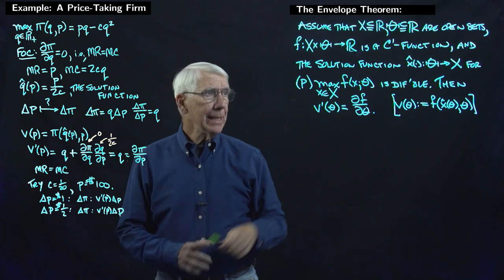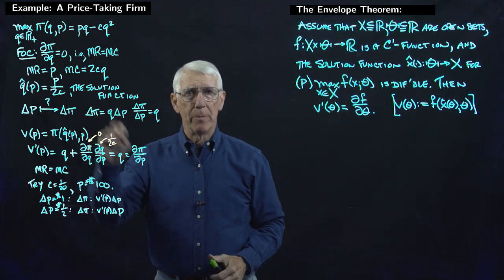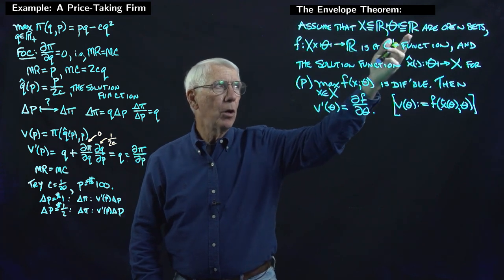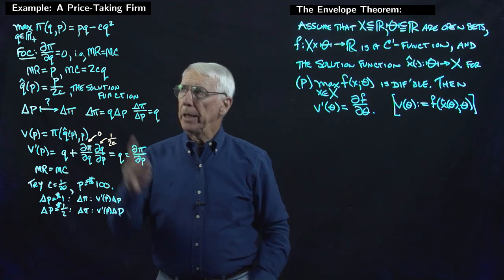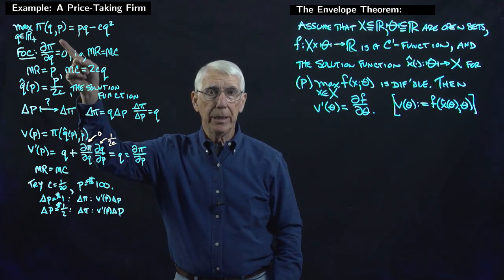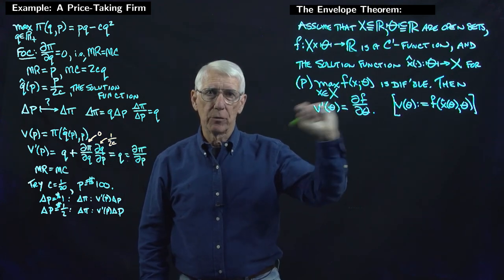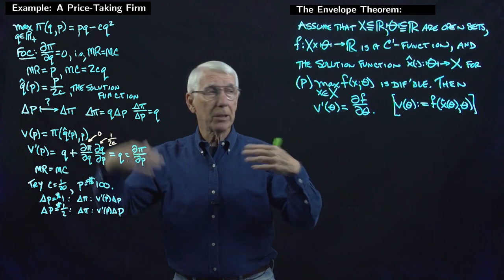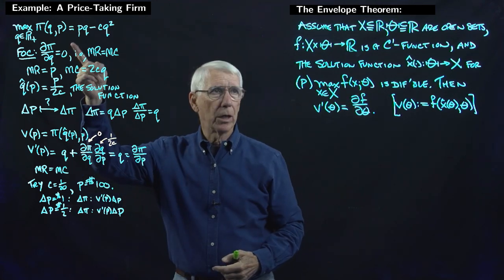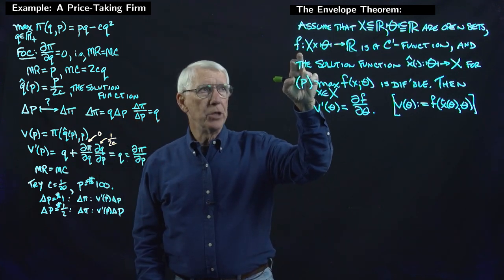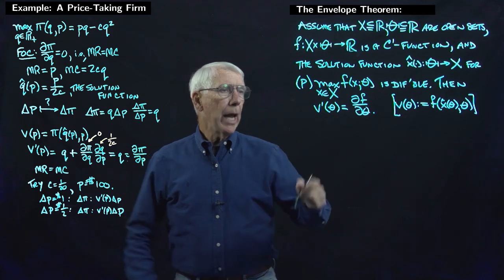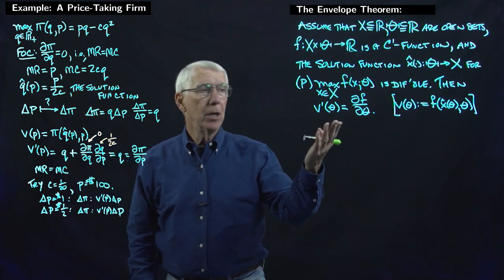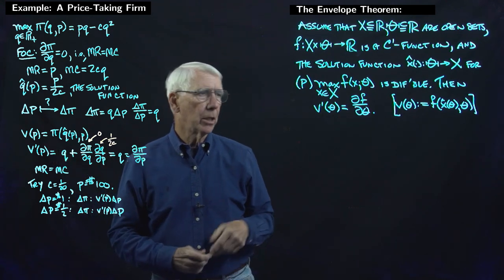This is exactly fitting with our example. The quantity the firm chooses plays the role of X. The price the firm faces — takes as given, as parametric in the marketplace — plays the role of theta. The profit function plays the role of the objective function F. We can see that the conclusion here is exactly the same as the conclusion from the example.